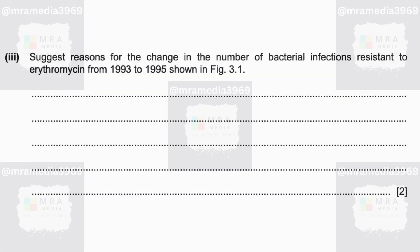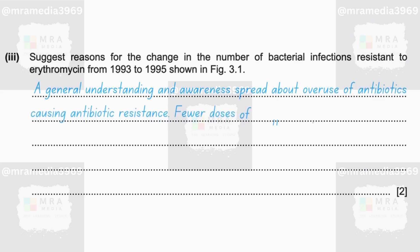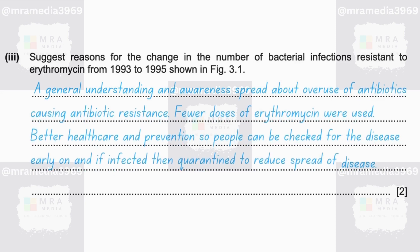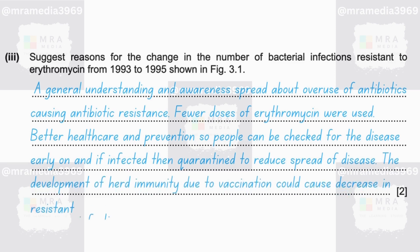Suggest reasons for the change in the number of bacterial infections resistant to erythromycin from 1993 to 1995 shown in Figure 3.1. Clearly it is reducing from 1993 to 1995. A general understanding and awareness spread about overuse of antibiotics causing antibiotic resistance, meaning that fewer doses of erythromycin were used — you can also see that from the graph.